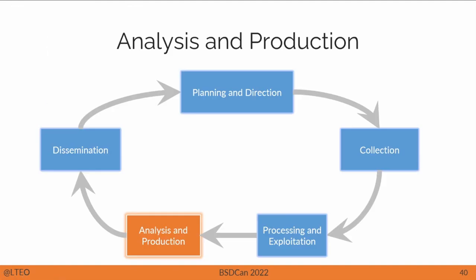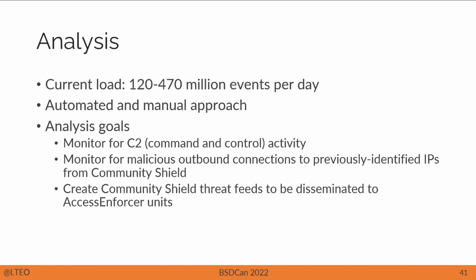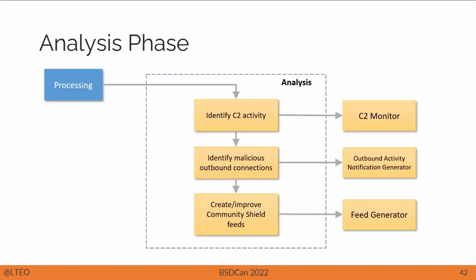Now we reach the analysis and production phase. Our current load is 120 to 470 million events per day — too many to sift through manually, so we use a combination of automated and manual approaches. The analysis goals here are to monitor for C2, as well as malicious outbound connections, and to create Community Shield threat feeds disseminated back to the Access Enforcer units. After processing is done, we have programs that monitor C2 activity, programs that identify malicious outbound connections, and we constantly look at the processed data to create and improve our Community Shield feeds.